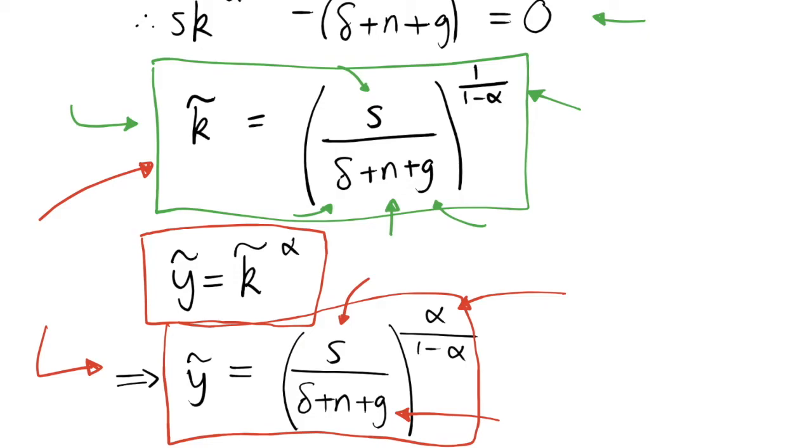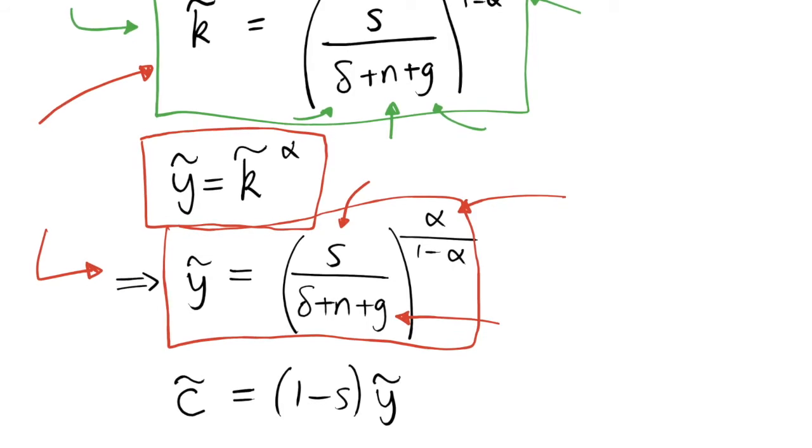And finally the other value that we'd be particularly interested in is our value of consumption or c tilde in balanced growth path. And this is the thing that we perhaps care about the most because we get utility from consumption. And if we have higher consumption we're going to have increases in welfare and so on because by consuming things consumers benefit.